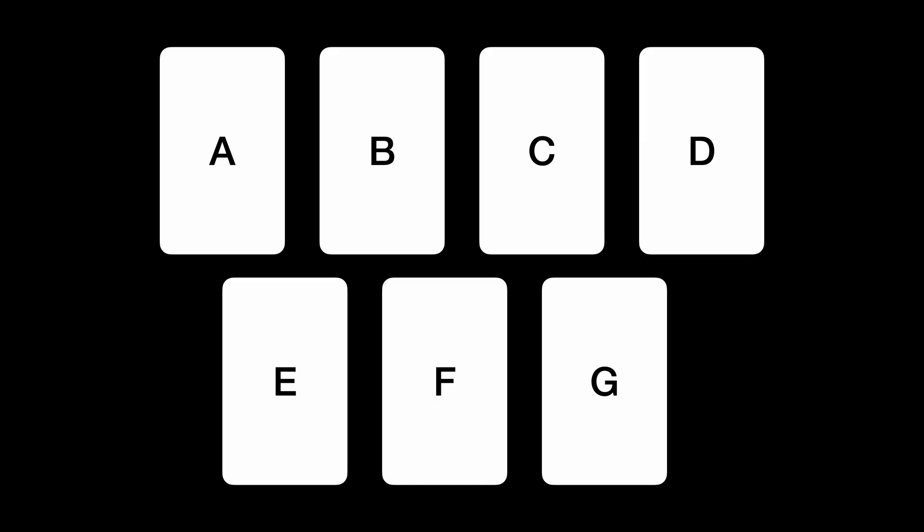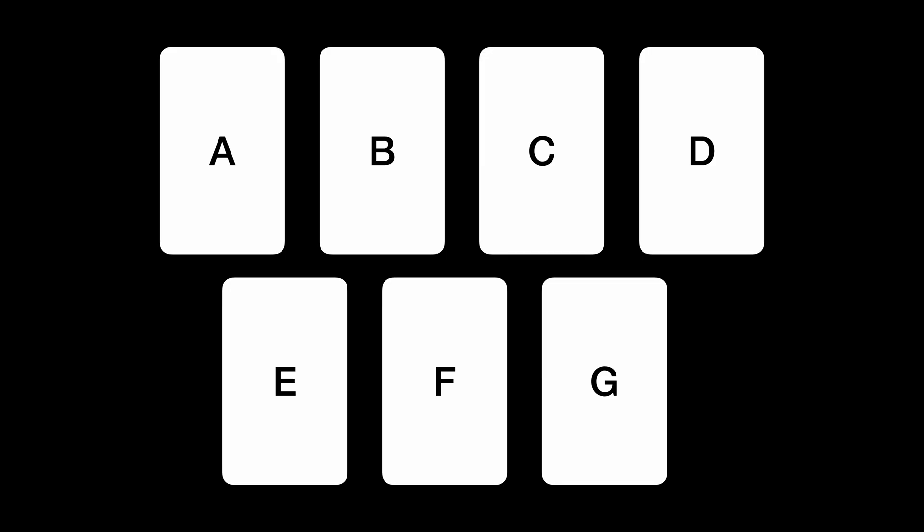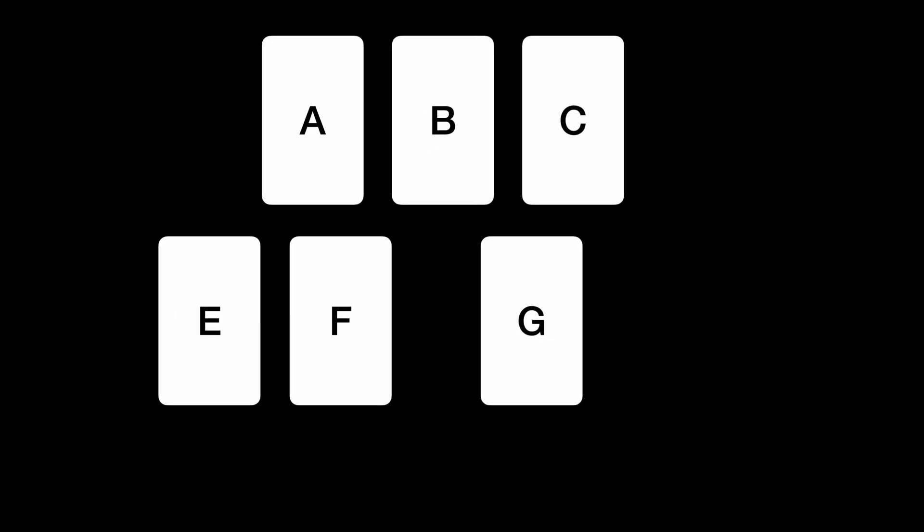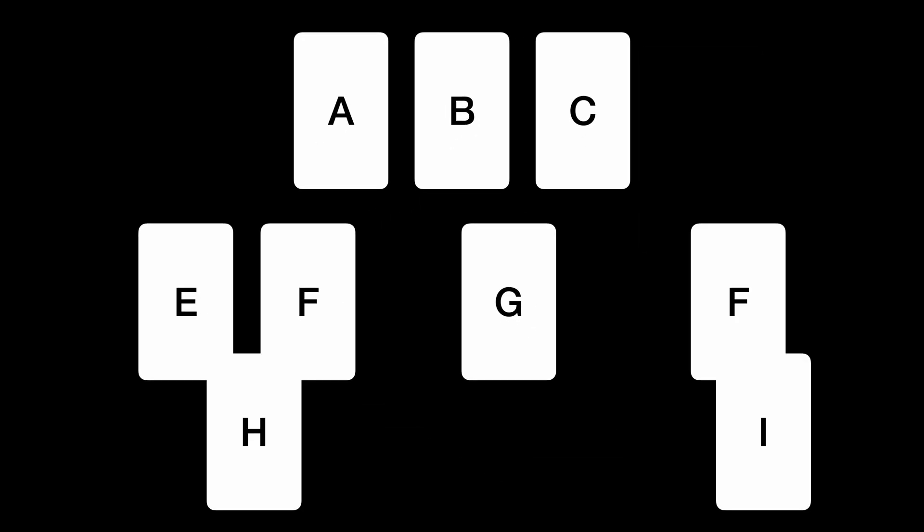Most apps use several screens to present their functionality and we structure the code in several screens as well. For any non-trivial app we don't want all the features of the app in one screen. Given that we are dealing with multiple screens, how do we move from one screen to another? The fact that there is a certain transition between screens means that there is a hierarchy of screens. We have three main ways to navigate between screens.